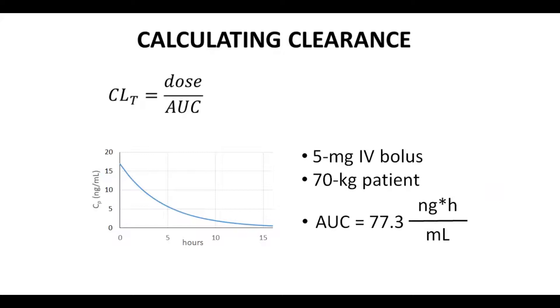So here is some idealized CP time data. So here's our curve. This is for a 5 milligram IV bolus dose. Again, we need to do these calculations on IV data. And the patient mass is 70 kilograms. That'll be important in the next slide. And from this information, we could determine the area under curve using something like the trapezoid approximation. And this calculates as 77.3 nanogram hours per milliliter.